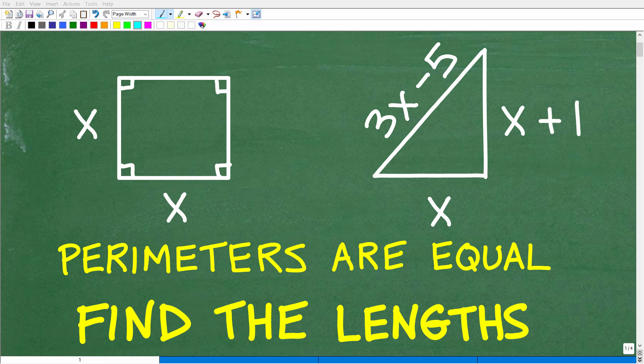This problem involves a square and a triangle, and the question is we want to find the actual lengths of the square and triangle. The only clue we have is that the perimeters of each of these figures are equal. The sides of the square are x, and the sides of the triangle are x, then x plus 1, and then this longest side here is 3x minus 5.